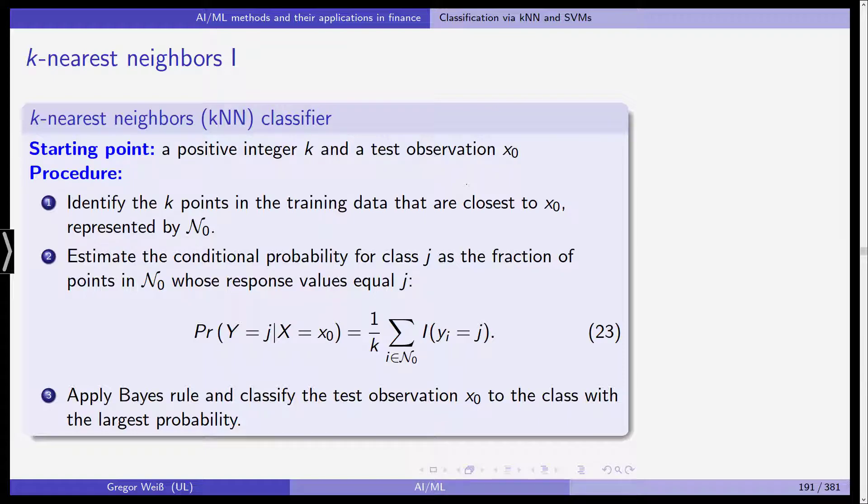So what we can do instead, and the K-nearest-neighbor classifier is closely related to the Bayes classifier, we start with a positive integer k, for example five nearest neighbors, three nearest neighbors. So we have an integer k and one test observation x0. Starting from this test observation x0, we identify the k points in the training data that are closest to x0, and we call this n0. Then we estimate the conditional probability. Note that this is not known ex-ante, but we can estimate the conditional probability for class j as the fraction of points in the set n0 whose response values equal j. So the probability is estimated simply by taking the average of the indicator functions when looking at the observations in the vicinity of x0 that belong to class j.